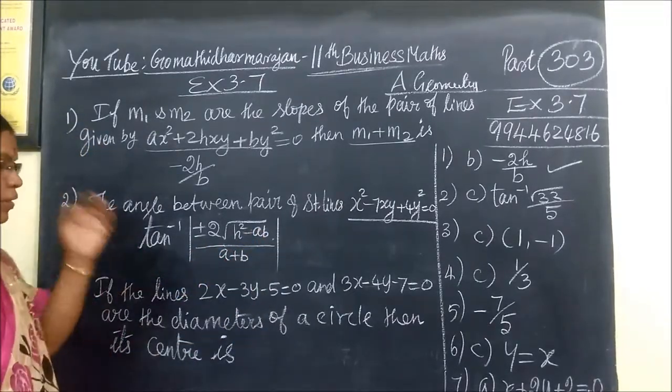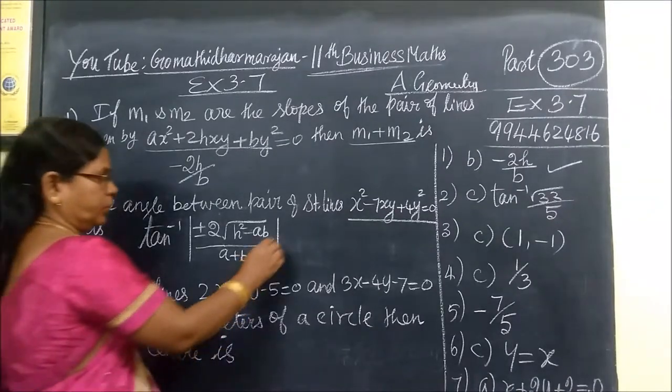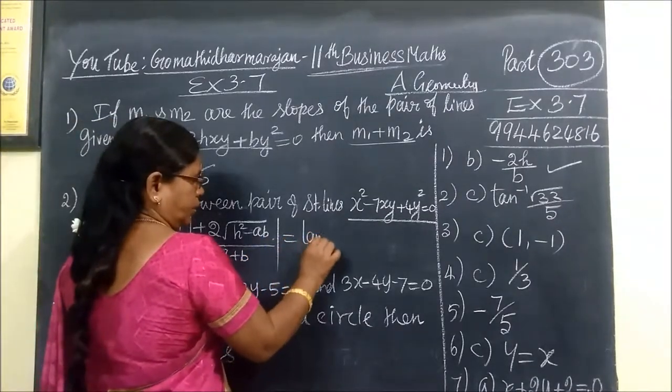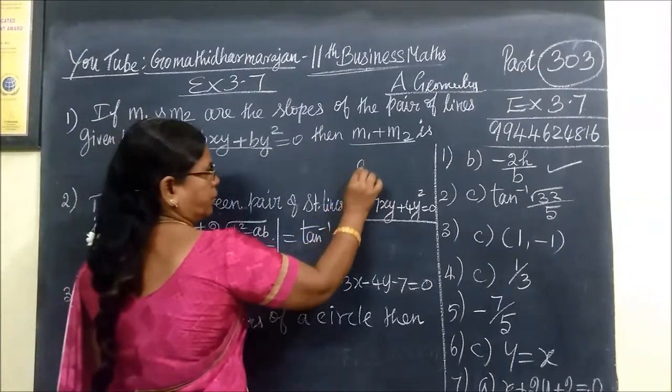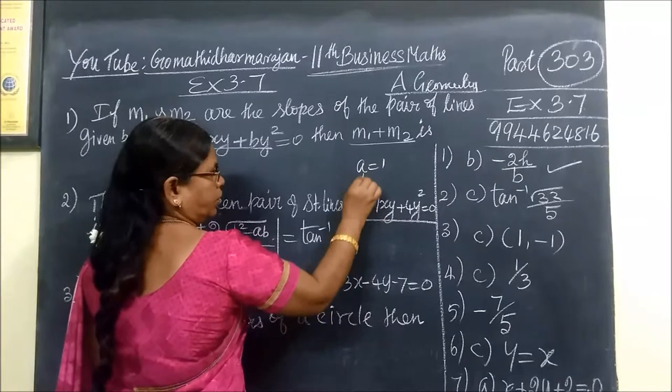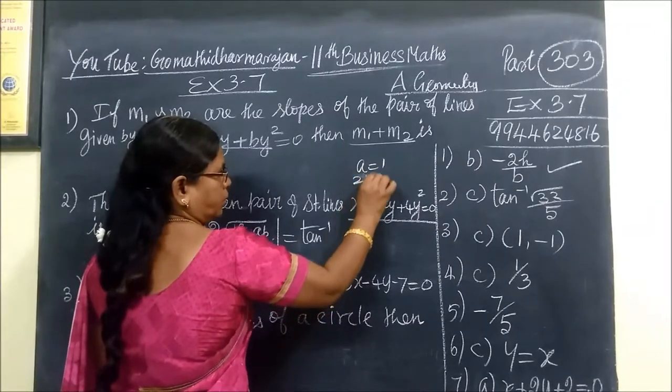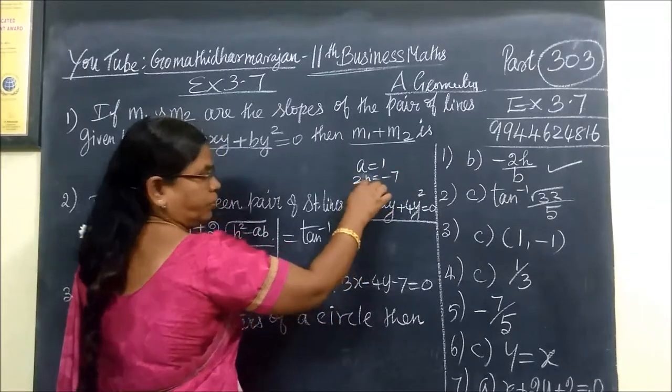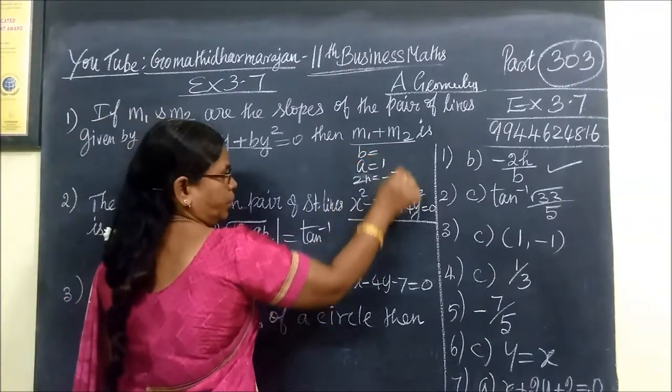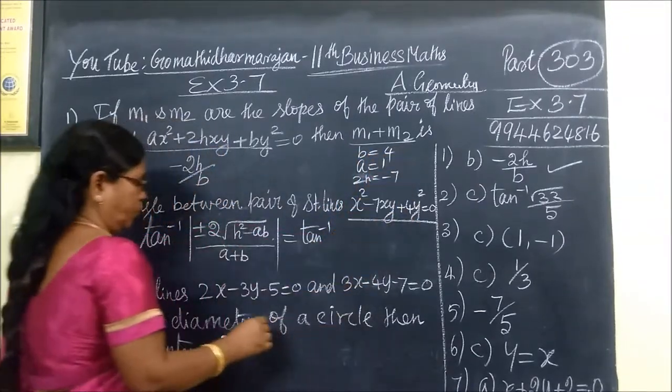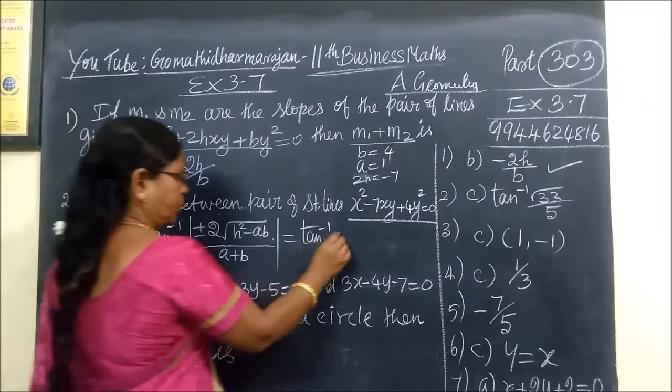The value is equal to tan inverse. What is the value of A? A is equal to 1, then H = -7/2, and B = 4.